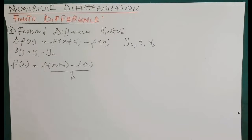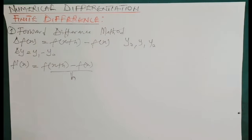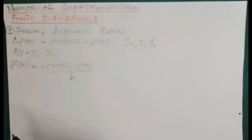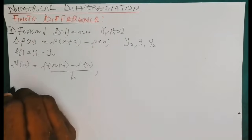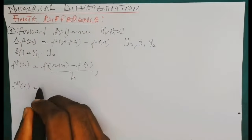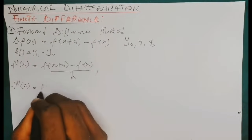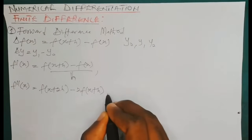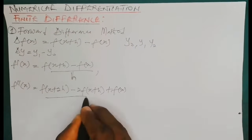The interval simply means the difference in the values of x. When a table is given to you, the difference in the values of x is called the interval — you can look up the playlist on numerical methods for interpolation to understand this better. For the second derivative approximation using the forward difference method, the formula is: f″(x) = [f(x + 2h) − 2f(x + h) + f(x)] / h².